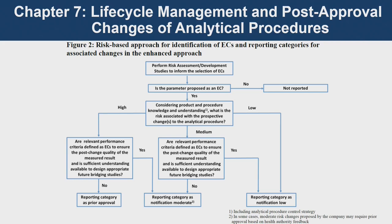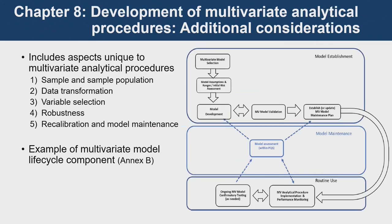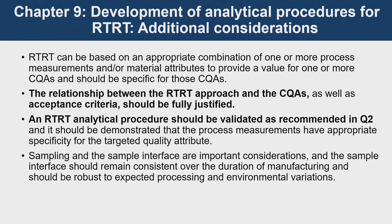A more appropriate bridging study could be done based on better understanding, and the ATP could also form the basis of PACMP. Through a bridging study, if the results are shown to be appropriate, even changes that would require approval could be handled at a lower reporting category. This table is also available in Q12 and shows what sort of impact a bridging study would have on the reporting category definition. Regarding multivariate analytical procedures, more detail is provided on what needs to be considered during the development process.